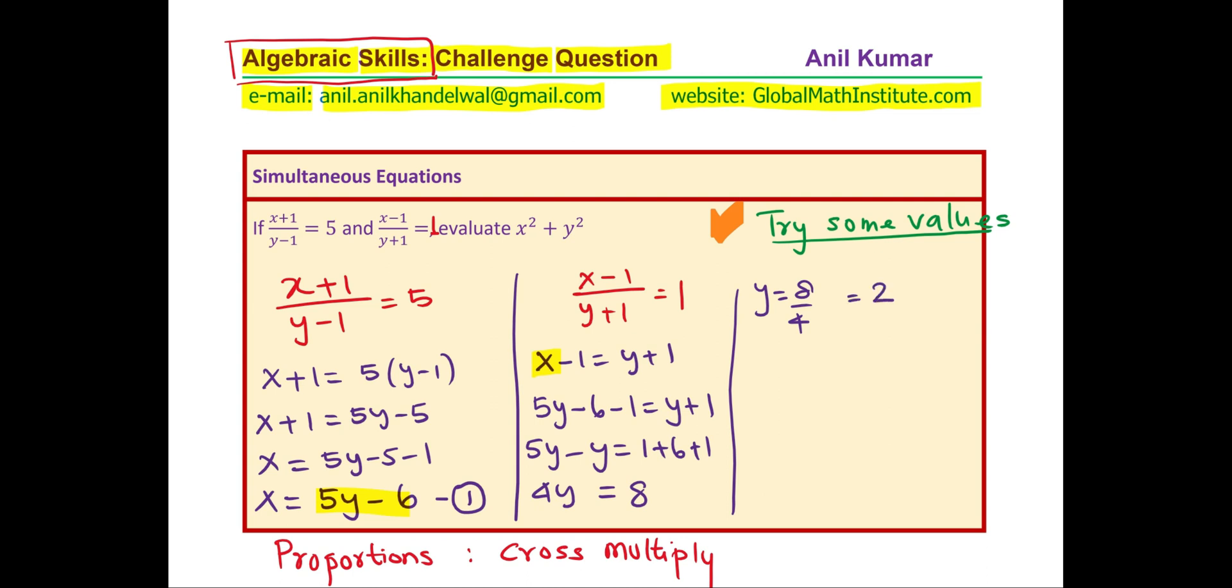Since you know y is 2, you can find x which is 5 times y minus 6, substituting 2 we get 5 times 2 is 10 and then take away 6 will give us 4.